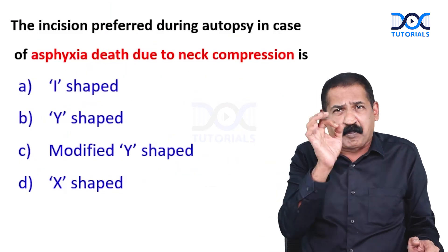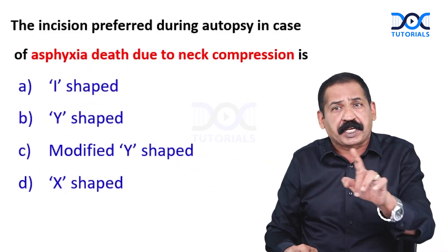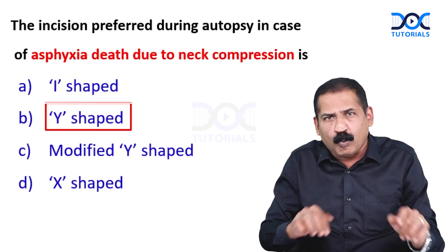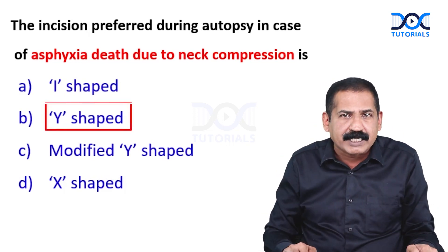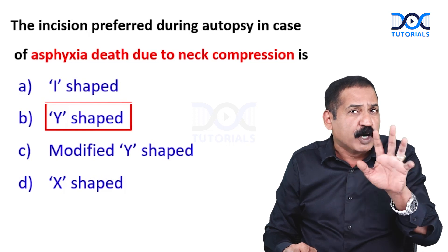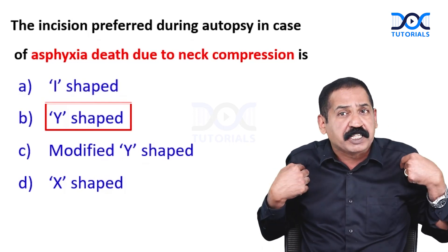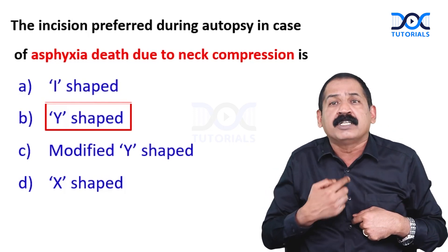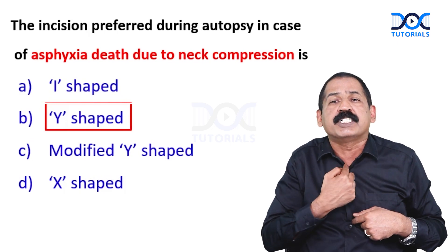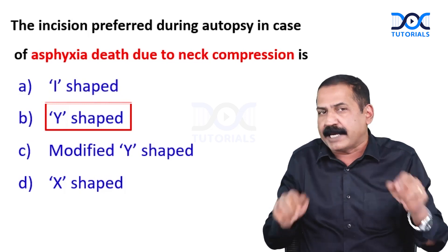You now have the proper reference. Hence, the incision preferred during autopsy in case of asphyxial death due to neck compression is the Y-shaped incision — not the modified Y-shaped incision. The modified Y-shaped incision is done in females for cosmetic purposes, to avoid visibility of the incision and sutures over the neck.